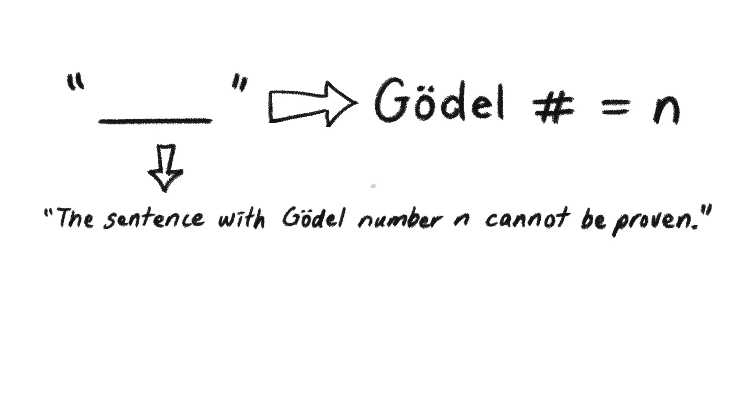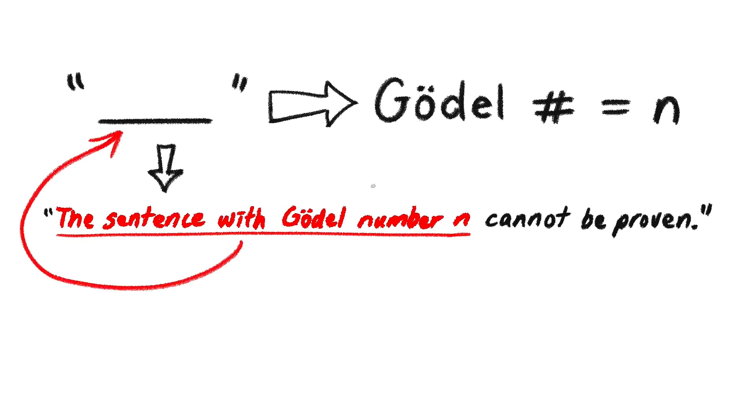Now here's the ingenious part. Gödel wrote a sentence that referred to its own number. The sentence has Gödel number n, and it says, 'the sentence with Gödel number n cannot be proven.' Since it's referring to itself, the sentence is really saying, 'this sentence cannot be proven.'